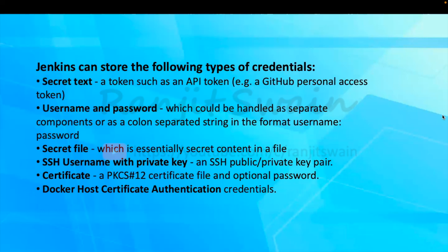Jenkins can store the following types of credentials. First, secret text — a token such as an API token, for example a GitHub Personal Access Token (PAT). You can store those as secret text. You can also store a username and password, which can be handled as separate components or as a colon-separated string in the format username:password.